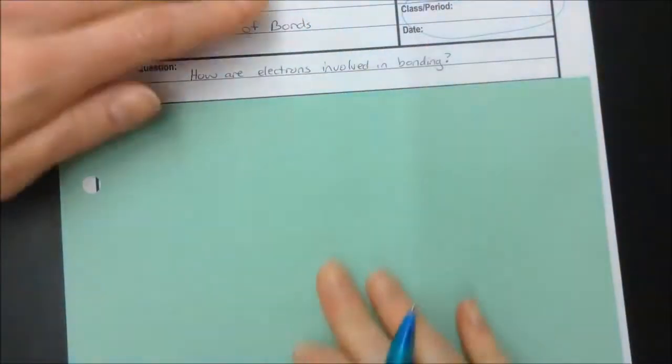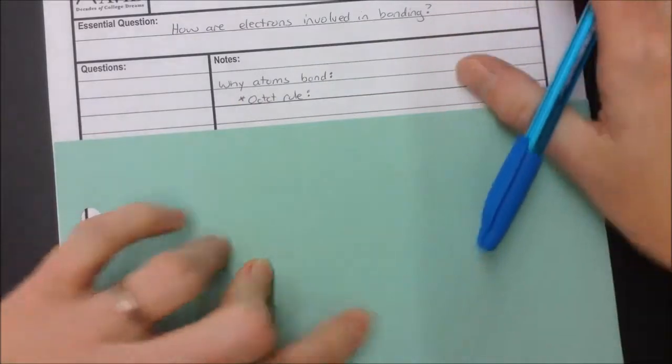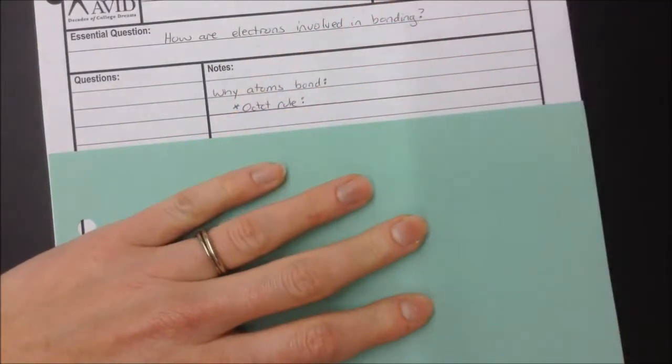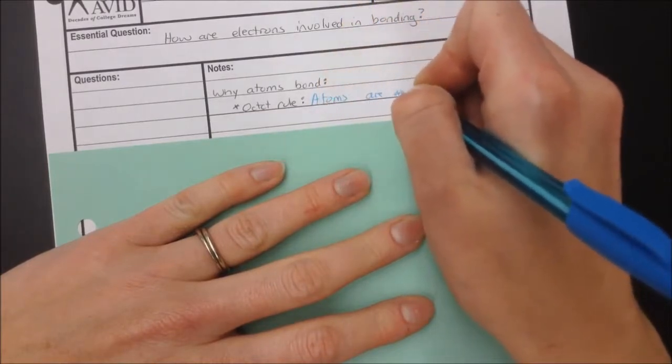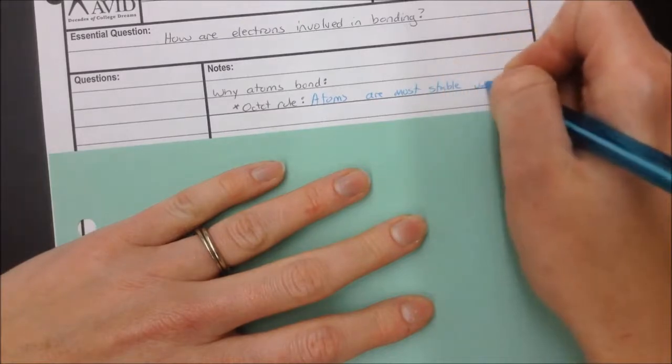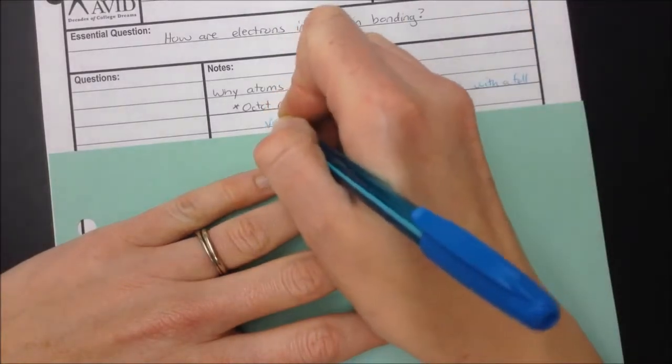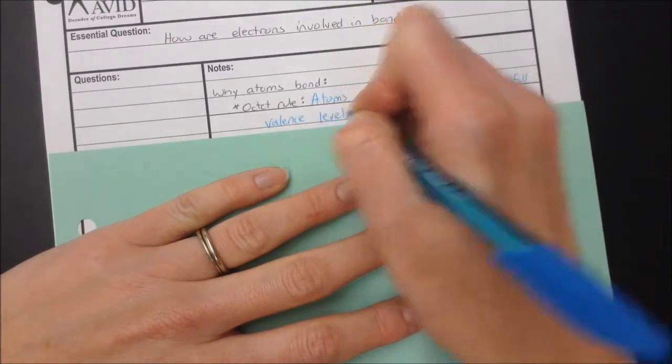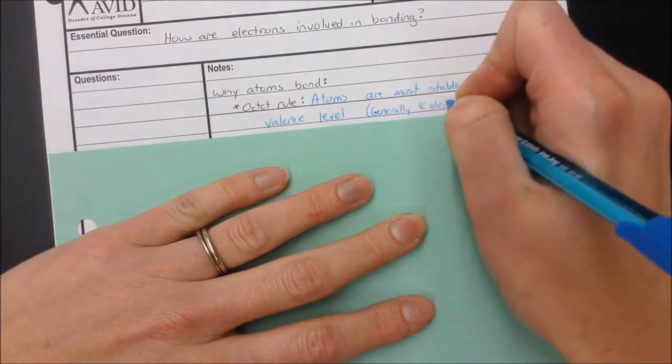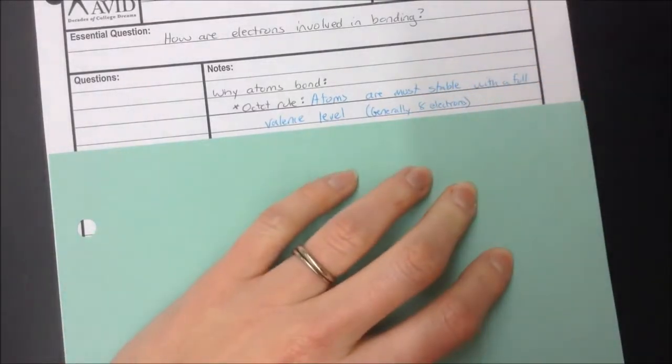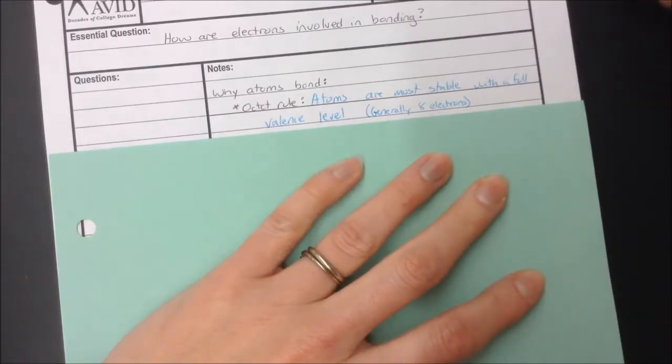To begin with, let's talk about why atoms bond. You might remember there's that thing called the octet rule, which we talked about when we discussed ions forming. The gist of it is that atoms are most stable with a full valence level, and that generally means eight electrons. The exceptions are on that first row: hydrogen and helium are happy with two, and lithium, beryllium, and boron have an easier time just losing their electrons to go down to two than getting all the way up to eight.